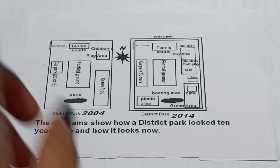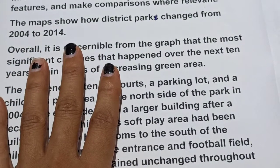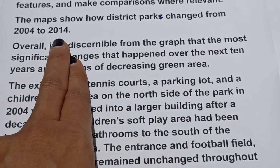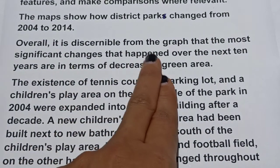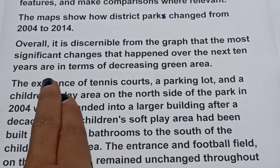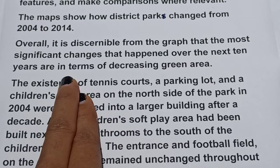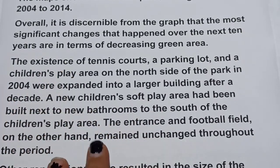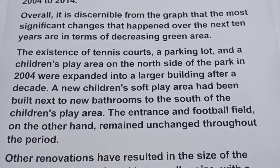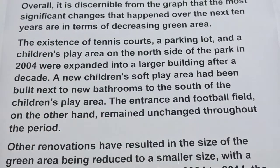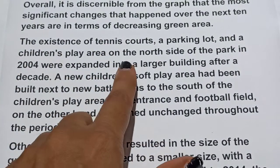Now let's see how we can write this. The maps show how the district park changed from 2004 to 2014. Overall, it is discernible from the maps that the most significant changes over the next 10 years were in terms of decreasing green area, as the green space was reduced due to modifications.